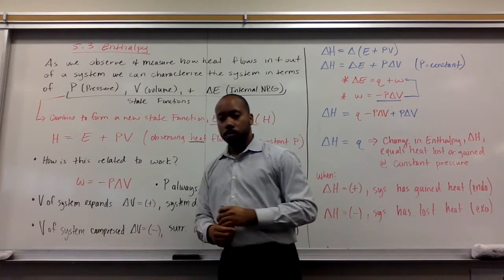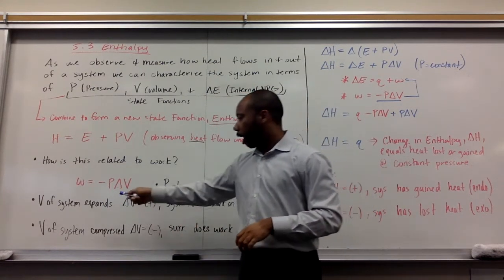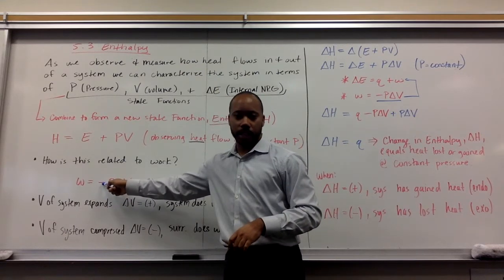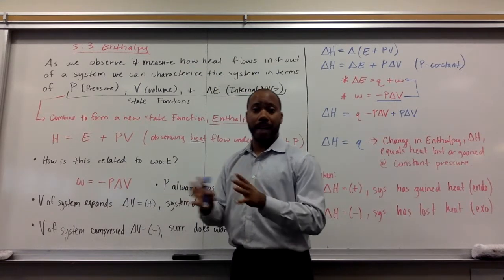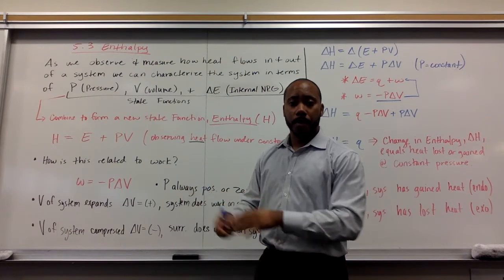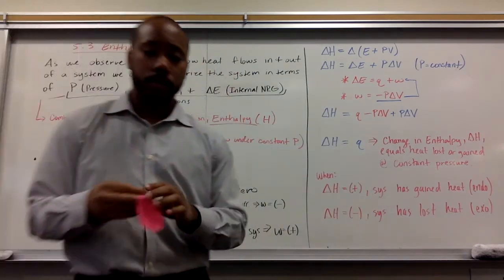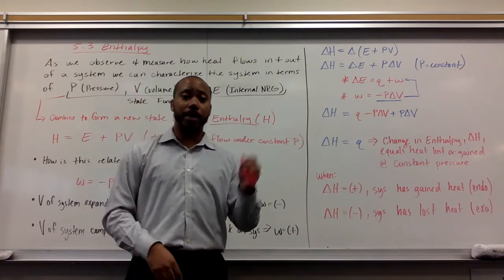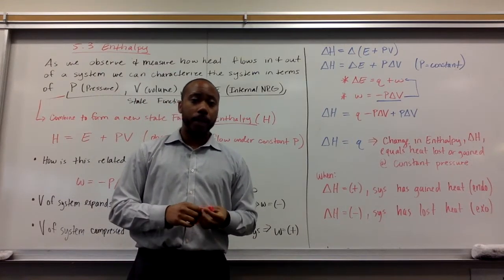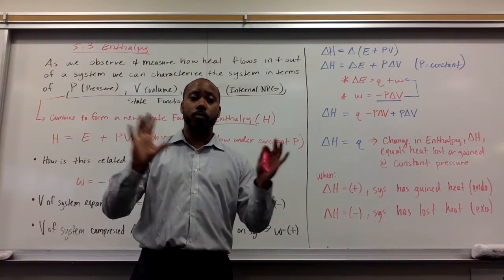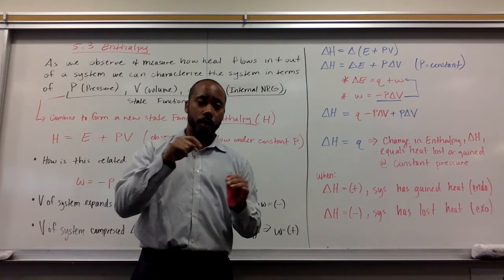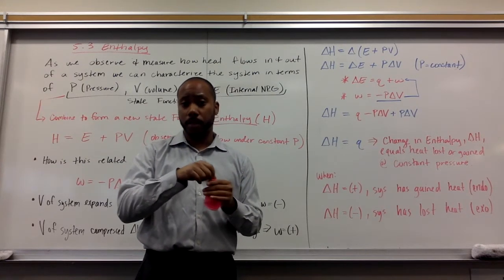Work is equal to negative p times delta v. This negative is going to keep everything mathematically balanced. But let's talk about the delta v. So let's say this balloon here, the inside of the balloon here is my system. If I'm going to do work on my surroundings, that means I need to put more gas into the system here.